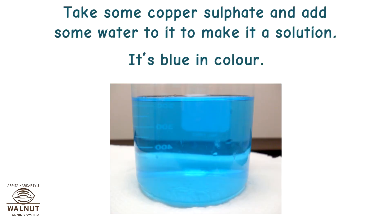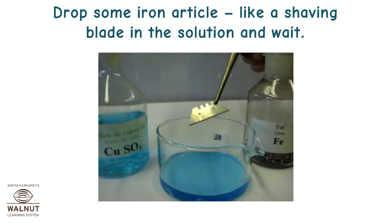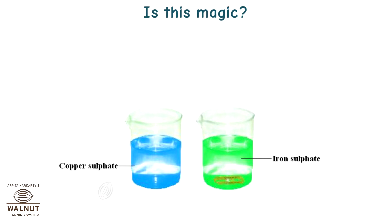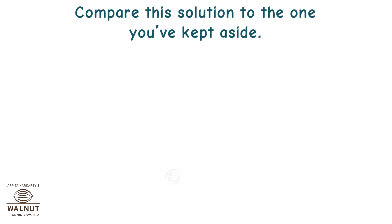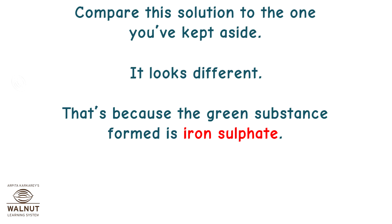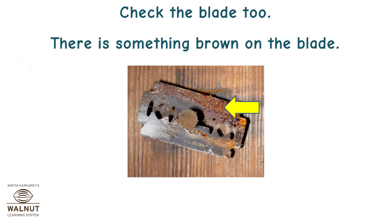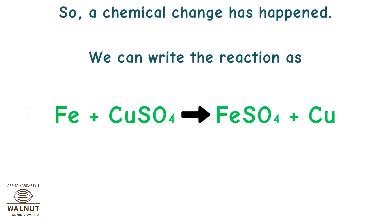Take some copper sulphate, add water to make a blue solution, then add drops of dilute sulphuric acid. Drop an iron article like a shaving blade into the solution and wait. In half an hour, the blue solution turns green. There is a reaction between copper sulphate and iron — the green substance formed is iron sulphate. The blade also shows something brown on it, which is copper. So a chemical change has happened. The reaction is: Fe + CuSO4 → FeSO4 + Cu.